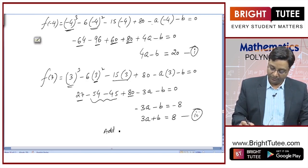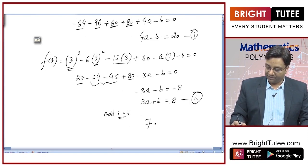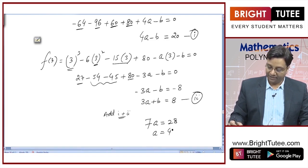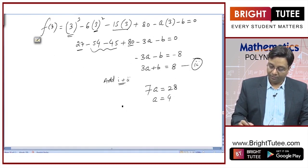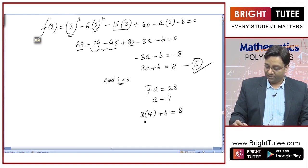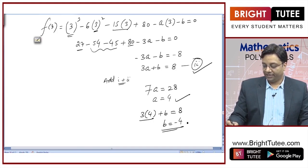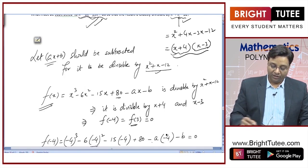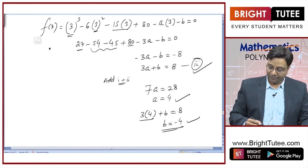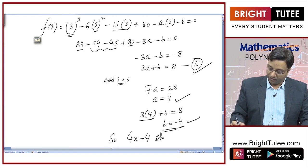Adding equations 1 and 2: 7a = 28, hence a = 4. Substituting into equation 2: 3·4 + b = 8, so b = 8 − 12 = −4. Since ax + b = 4x − 4 should be subtracted, the answer is that 4x − 4 must be subtracted from the cubic polynomial.